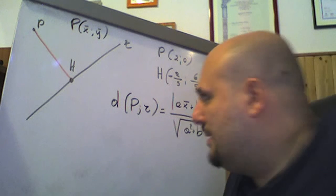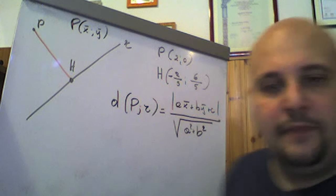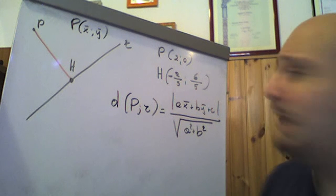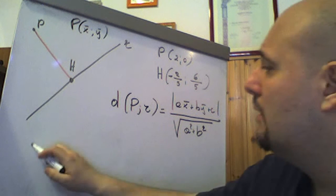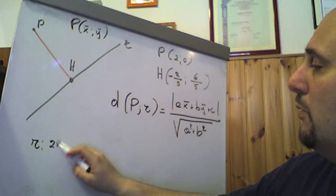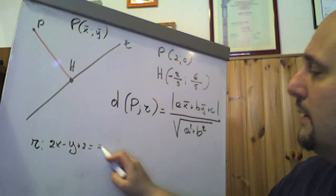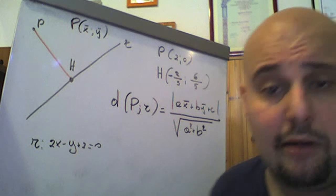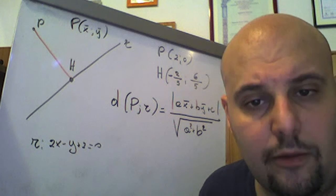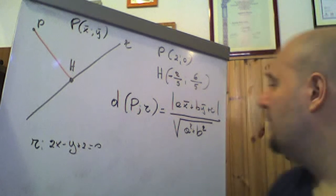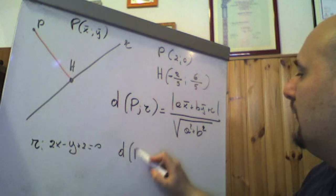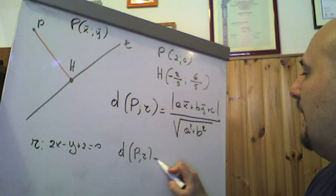Partiamo dalla formula e calcoliamola. Nel nostro caso conosciamo l'equazione della retta R: 2x - y + 2 = 0. Il punto P è (2, 0). Quindi applichiamo: la distanza di P da R sarà, applicando quella formula, il valore assoluto di A·x̄ + B·ȳ + C. A è il coefficiente davanti a x della retta, quindi 2.